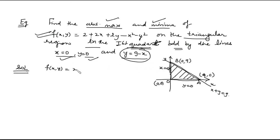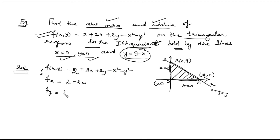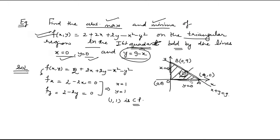First, we find the interior points where the function may assume maxima and minima. We find the partial derivative with respect to x: fx = 2 − 2x, and with respect to y: fy = 2 − 2y. Setting these to zero, we get the critical point (1, 1), which clearly lies inside the triangular region and is not on the boundary.